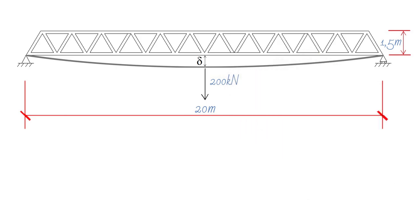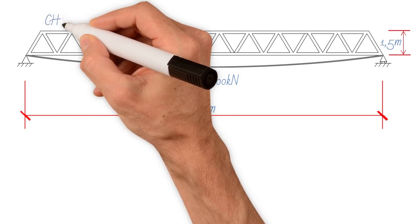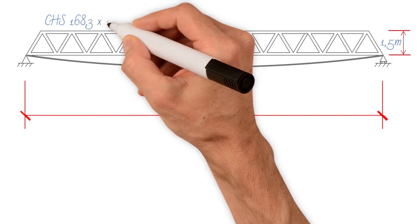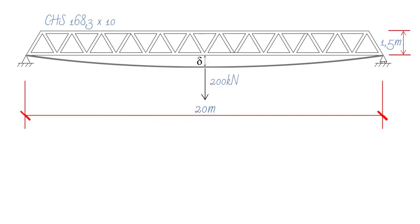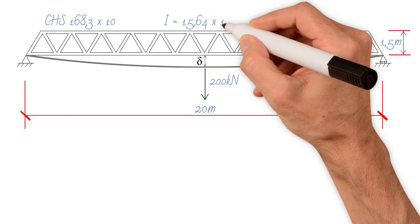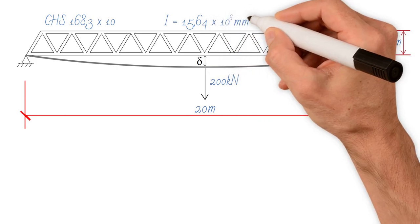We have the value of each individual cord member. The top and bottom cords are CHS 168.3 by 10, and each has second moment of area 15.64 times 10 to the 6 millimeters to the 4